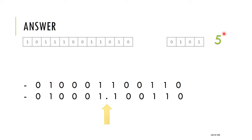The next step is to apply the exponent adjustment. The exponent is five, so I need to move the decimal point five places. The new location for the decimal dot will be after the fifth bit position.